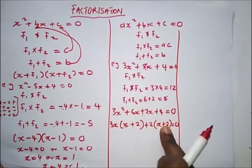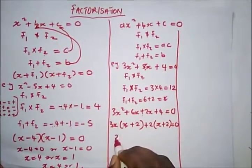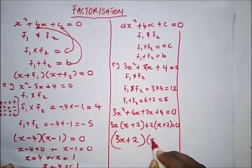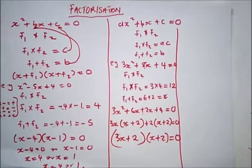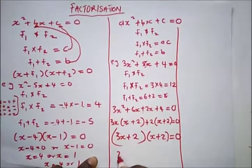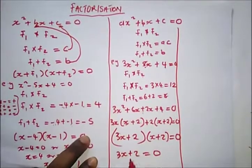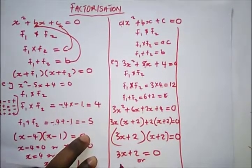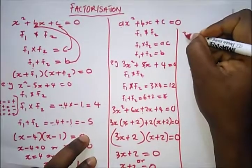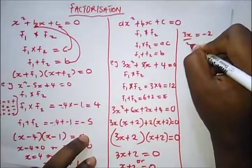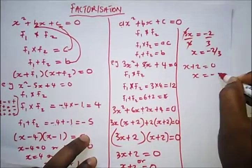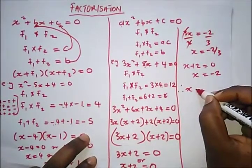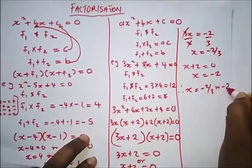We can see that (x + 2) is common to both groups. Taking it out: (3x + 2)(x + 2) = 0. So either 3x + 2 = 0 or x + 2 = 0. From 3x = −2, dividing both sides by 3 gives x = −2/3. From x + 2 = 0, we get x = −2. Therefore x = −2/3 or x = −2.